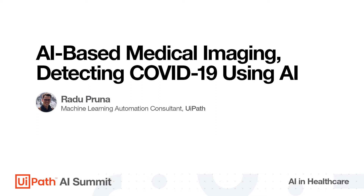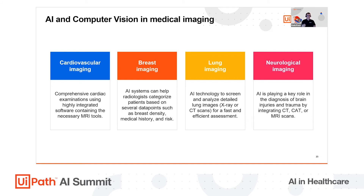This may seem a bit science fiction, but all the examples I'm going to talk about are real examples that actual companies have implemented in production level environments. One example: think of software that assists radiologists in the assessment and characterization of breast anomalies using MRIs. Such a machine learning model can calculate the likelihood of malignancy, and it can also highlight the areas of interest using what we call an image segmentation technique.